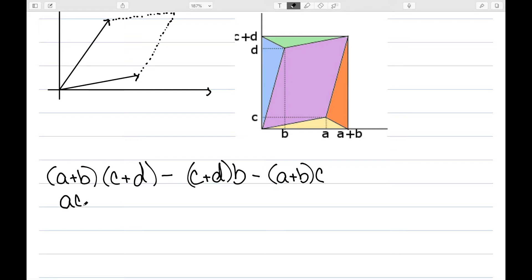foiling on this side gives me ac plus ad plus bc plus bd. Distributing these I have minus bc minus bd minus ac minus cb. So now my bc's cancel, my bd's cancel, my ac's cancel, and I'm left with ad minus bc, which is exactly the determinant.